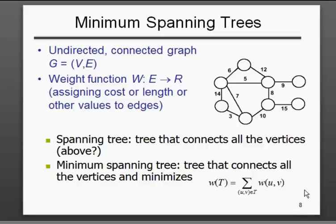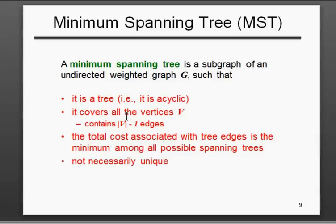A minimum spanning tree always looks for the minimum weighted edges, not the maximum weighted edges — so a maximum spanning tree would use maximum weighted edges. The graphs have to be undirected and connected, and the weight function determines the cost or length of the edges.